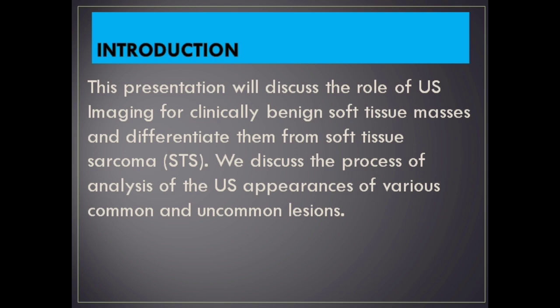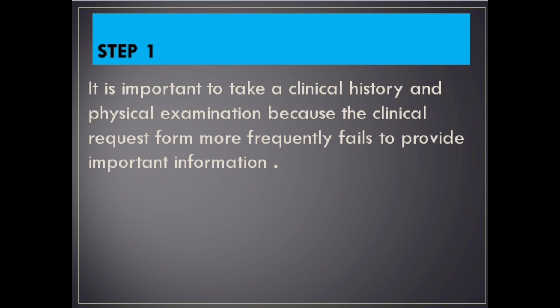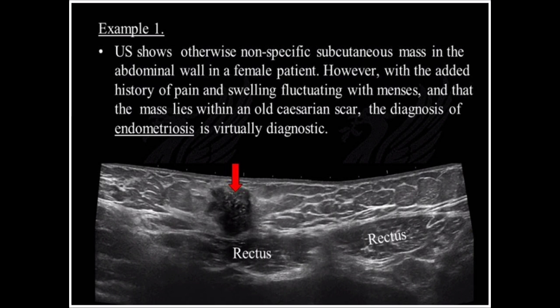Step 1. It is important to take a clinical history and physical examination, because the clinical request form more frequently fails to provide important information. Example 1: Ultrasound shows an otherwise nonspecific subcutaneous mass in the abdominal wall in a female patient. However, with the added history of pain and swelling fluctuating with menses, and that the mass lies within an old cesarean scar, the diagnosis of endometriosis is virtually diagnostic.